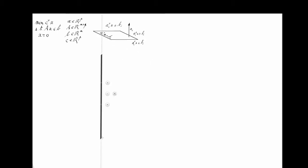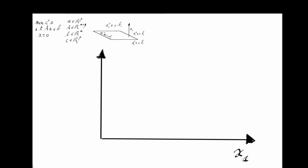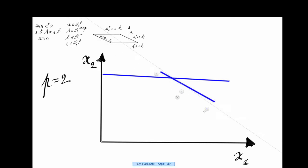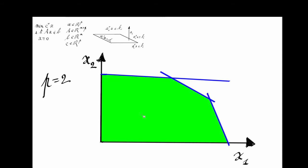Let's see how it works in two dimensions, so p equals 2. We draw the two axes x1 and x2. Let's draw in blue three hyperplanes — in this case three lines because p equals 2 — corresponding to three constraints. The intersection of the three half-spaces and the non-negative orthant is represented by this green area. This is called the polyhedron, and it corresponds to the set of feasible solutions — all solutions that verify the constraints of our optimization problem.